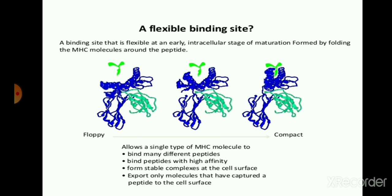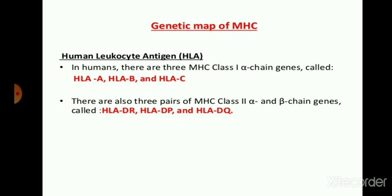Whenever the antigen binds to the cell receptor, it binds to the antigen and shows the antigen peptide towards the cell surface, and exports these molecules towards the T cell receptor for the recognition and initiation of immune response. Now talking about the genetic map of MHC — the MHC molecule genes present in the human being. Basically chromosome 6 contains the MHC molecules, and these MHC molecules are known as the human leukocyte antigen molecule.